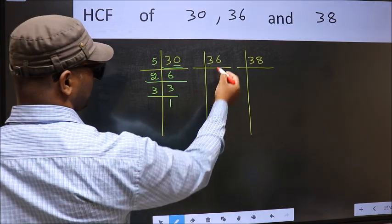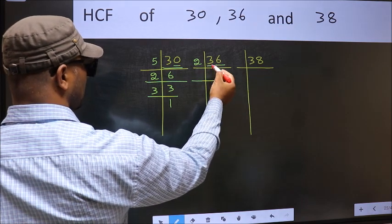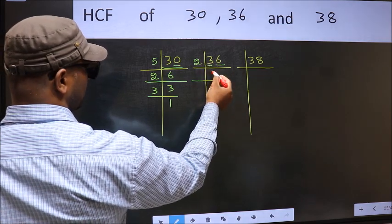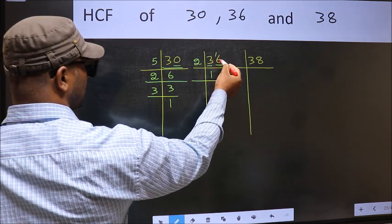Now the other number. Last digit 6, even so take 2. First number 3. A number close to 3 in 2 table is 2 times 1 is 2. 3 minus 2 is 1, 1 carried forward 16.